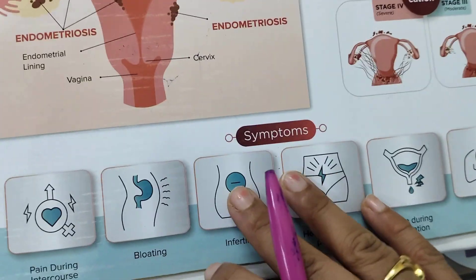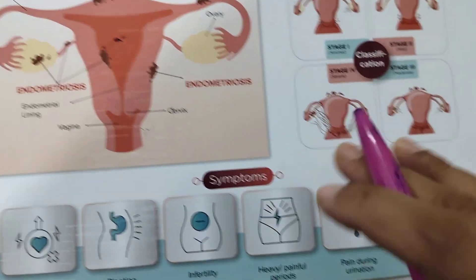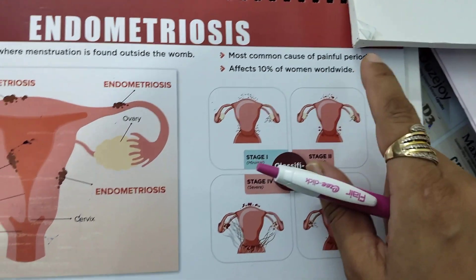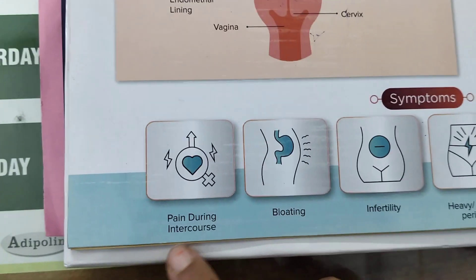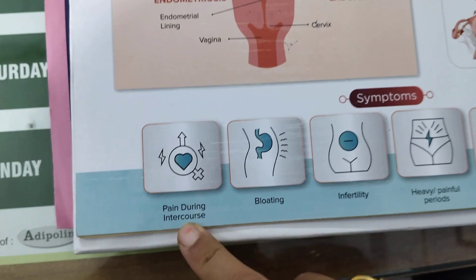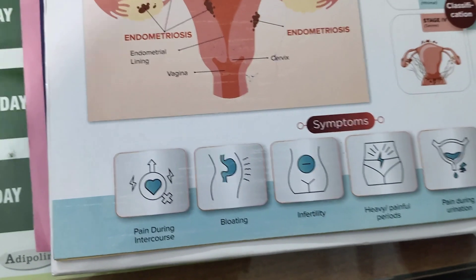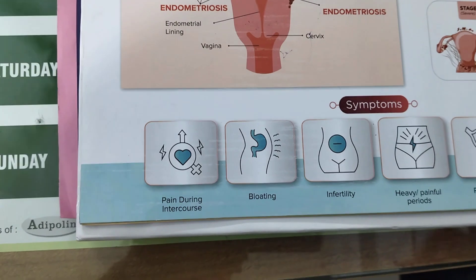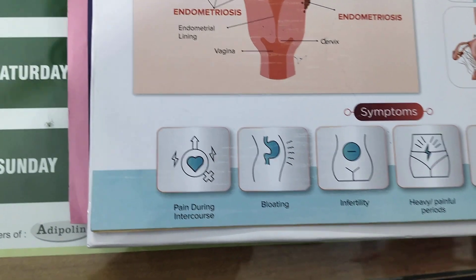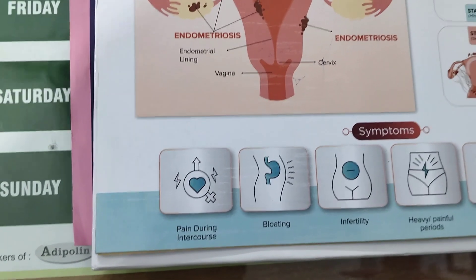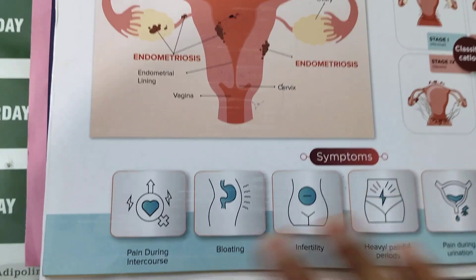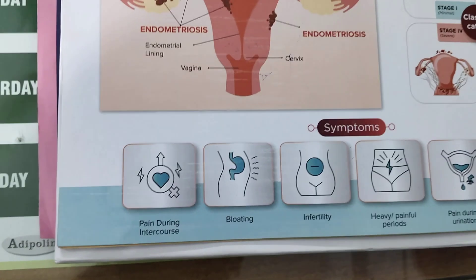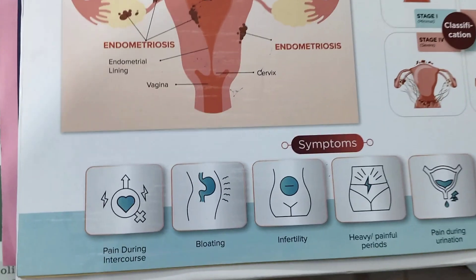Coming to the symptoms — when should you think you may have endometriosis? It is one of the most common causes of painful periods as well as pain during intercourse. Most females think having severe pain during periods is normal. It can be normal, but it is always wise to rule out any problem. If you have pain during your periods or painful intercourse, it is a better idea to go and check with a gynecologist.